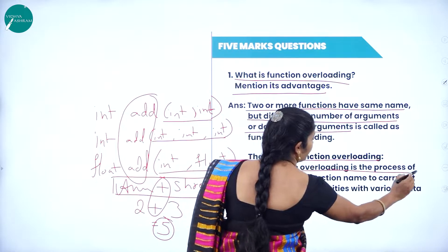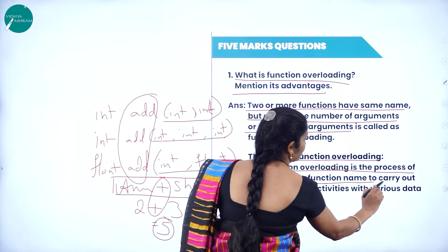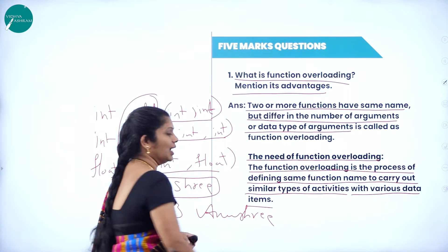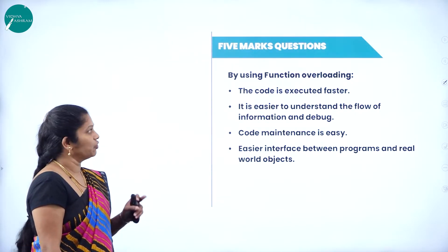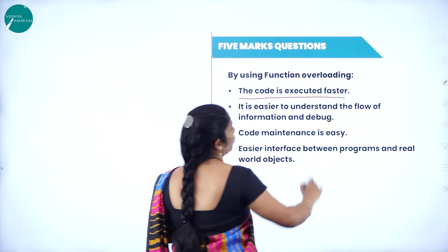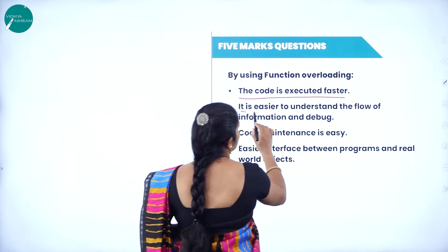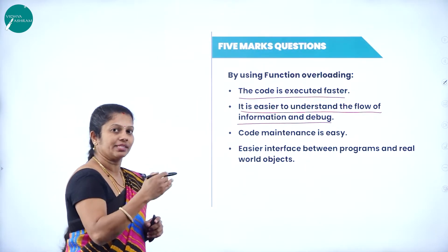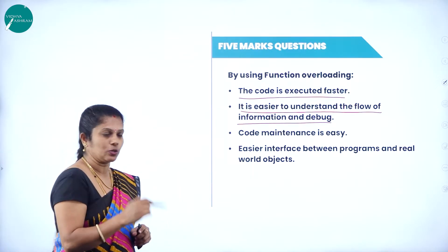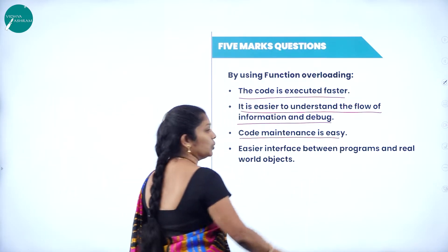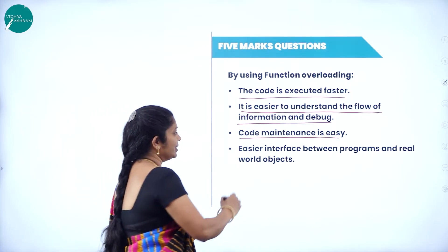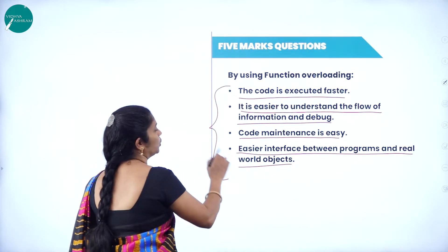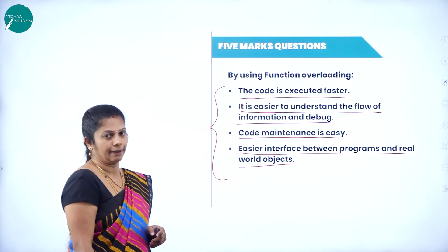Function overloading is the process of defining the same function to carry out similar types of activity with various data items. Advantages of function overloading: the code executes very fast; it is easier to understand the flow of information as well as debug; if we make any mistake, we can easily correct it; code maintenance is also easy; and there is an easier interface between the program and real-world objects.